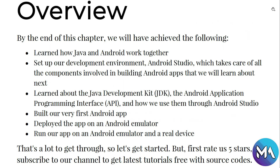By the end of this chapter we will have achieved the following: learned how Java and Android work together; set up our development environment, Android Studio, which takes care of all the components involved in building Android apps; learned about the Java Development Kit (JDK), the Android Application Programming Interface (API), and how we use them through Android Studio; and learned how to build our very first Android app and deploy it on an Android emulator and a real device.